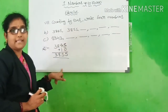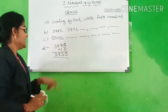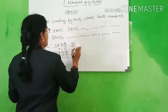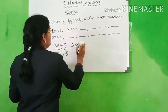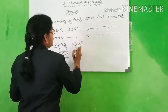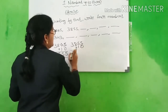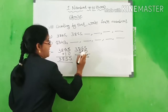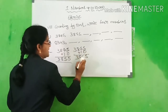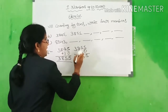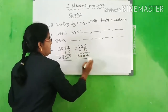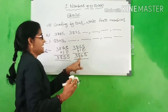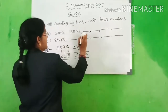Already there. Next, we have to count 3,855 plus 10. 5 plus 0 is 5, 5 plus 1 is 6, 8, 3. We will get 3,865.